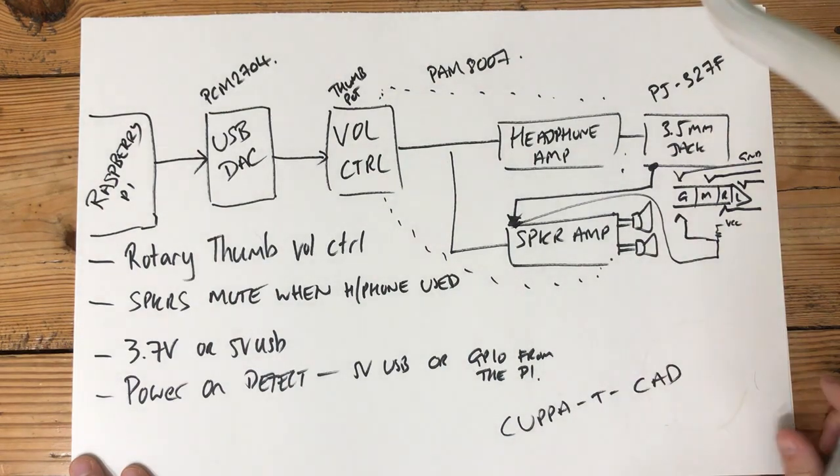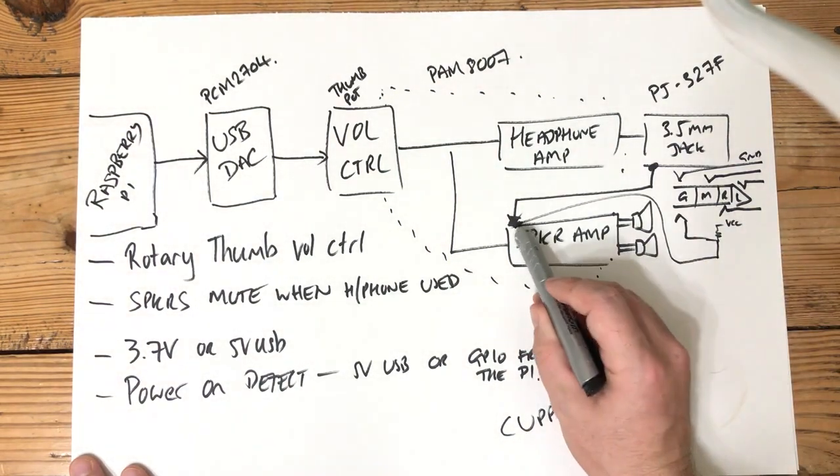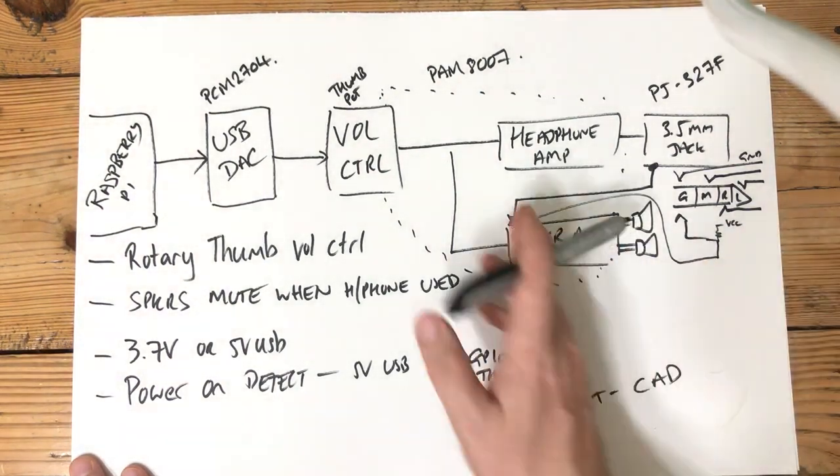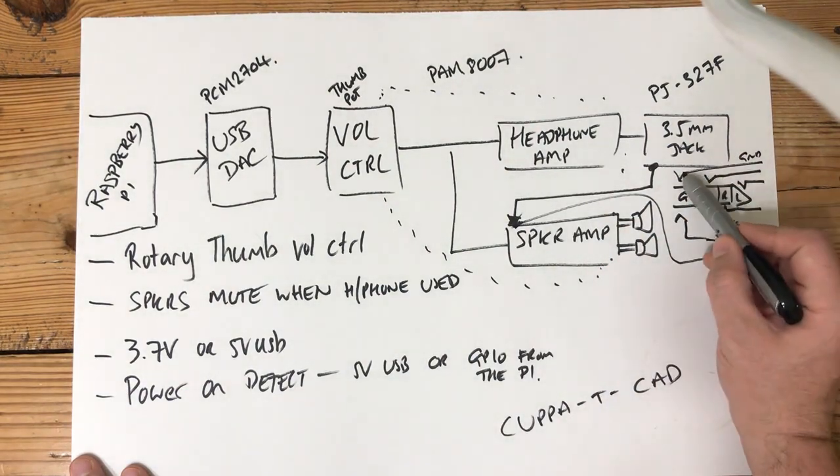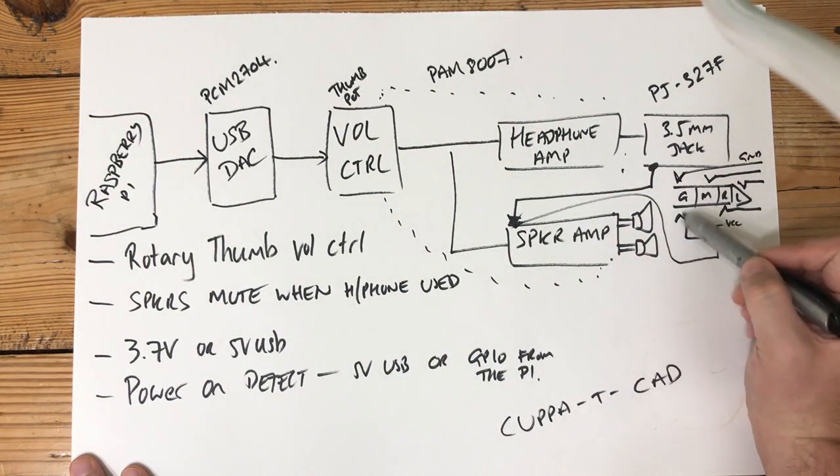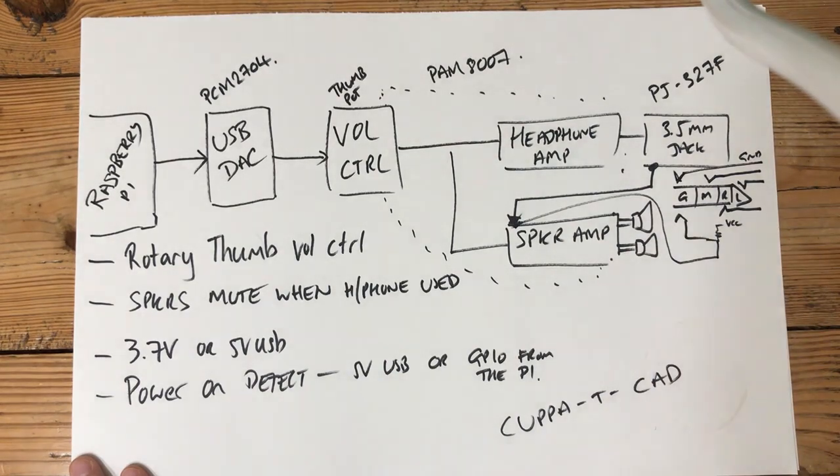So essentially, when nothing is connected, this gets pulled up to VCC. But as soon as I insert the jack here, the ground that's on one side actually carries across the barrel over to the other side and switches our speaker amplifier off.